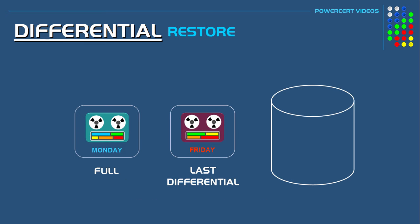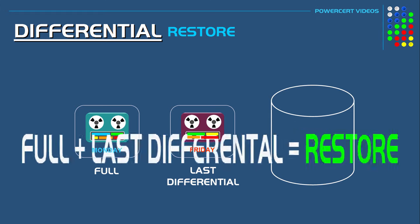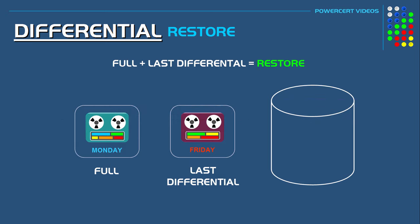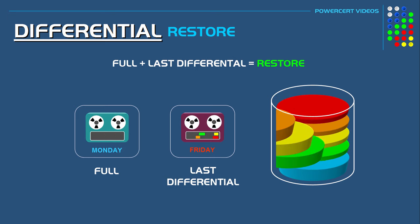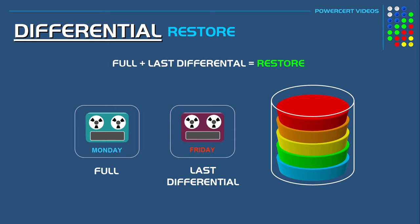Now after a differential backup, if you ever needed to restore the data, you would only need the last full backup and the last differential backup to completely restore your data. So for example, if a crash were to happen on the weekend, you would restore Monday's full backup and then restore Friday's differential backup. Once that is done, you'll have a full restore of your data.